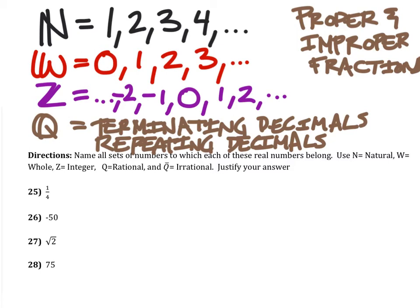And anything that's irrational is not rational, integer, whole, or natural. So now that we know these, we can go in here and look.